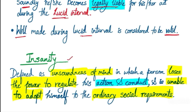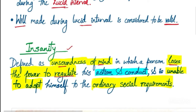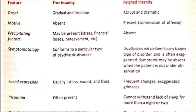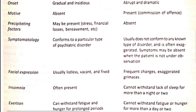Insanity is defined as unsoundness of mind in which a person loses the power to regulate his actions and conduct and is unable to adapt himself to ordinary social requirements. Now discussing true insanity versus feigned insanity: true insanity means the person is actually insane, while feigned insanity means the person is not insane — they are just being dramatic.